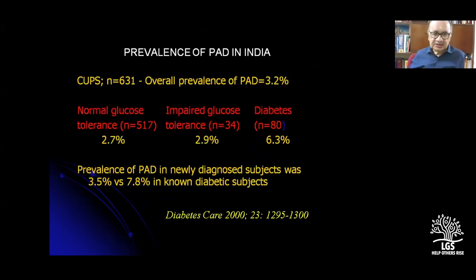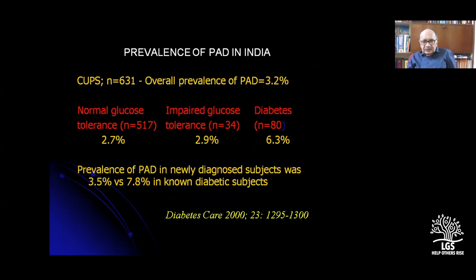An interesting study by Mohan with 631 people found an overall prevalence of PAD of 3.2%. This is the Madras study on prevalence of PAD in newly diagnosed subjects — 3.5% versus 7.8% in the rival equation.